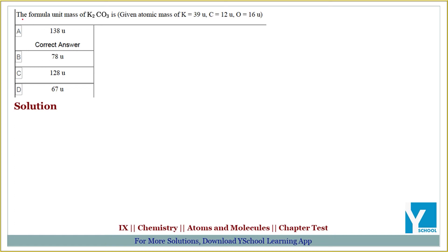The question is: the formula unit mass of potassium carbonate is? So simply, to find the formula unit mass of potassium carbonate — potassium's atomic weight is 39, so potassium contributes 2 into 39.